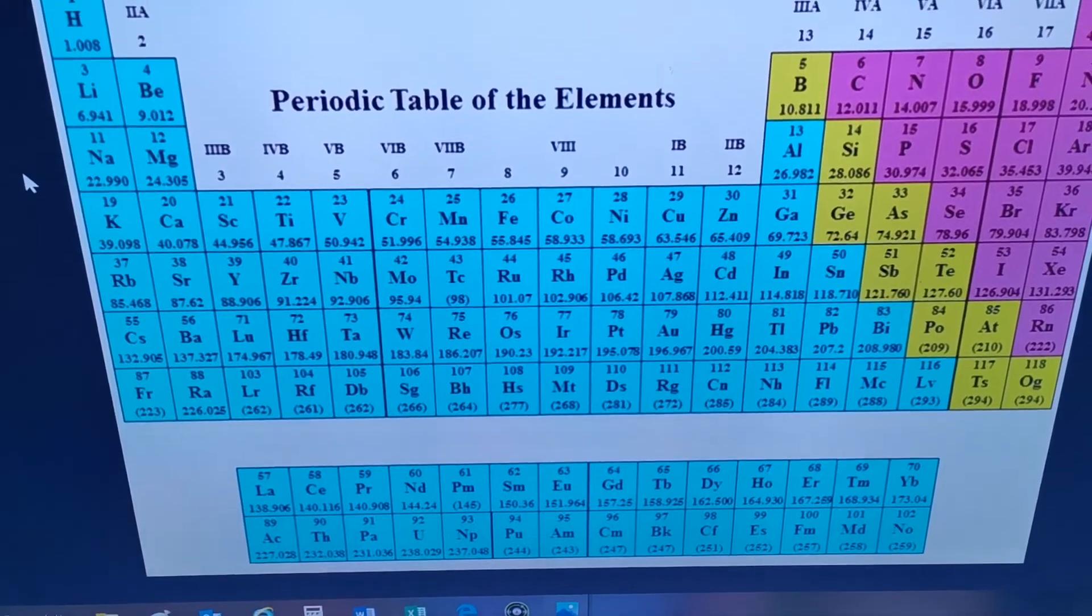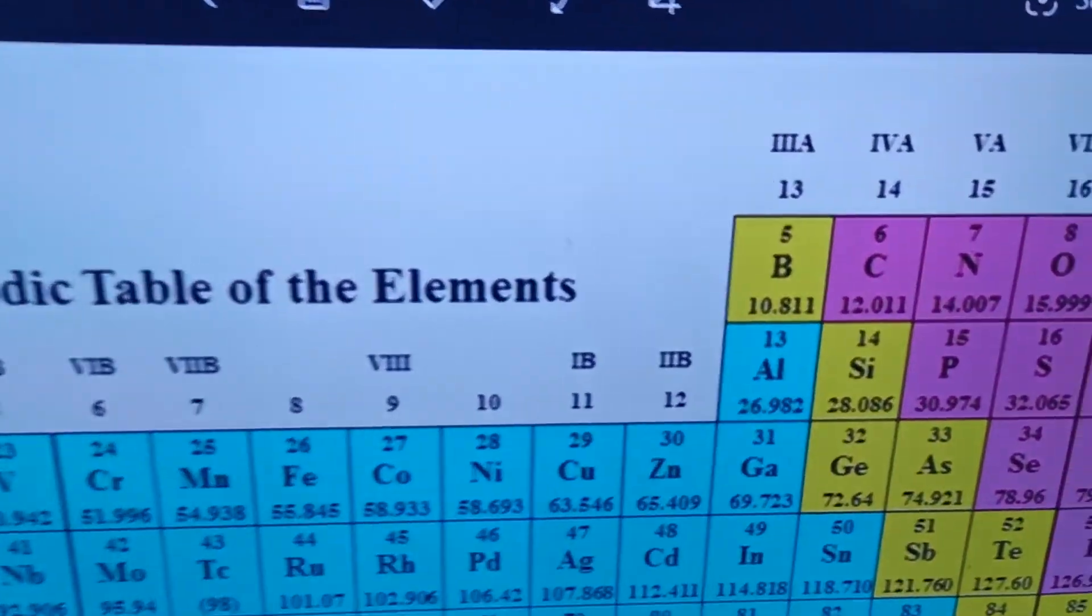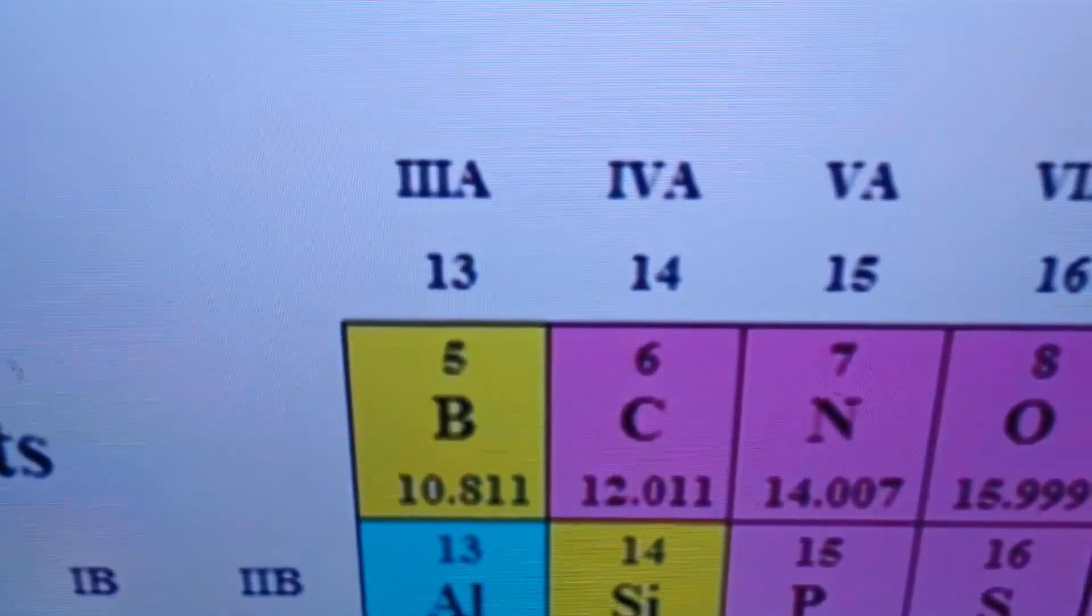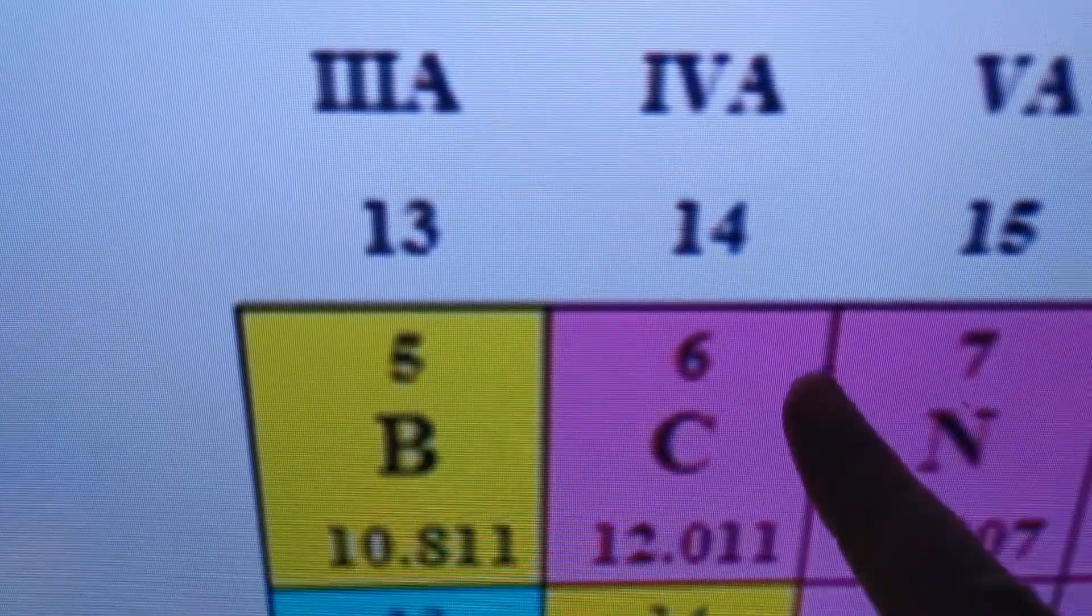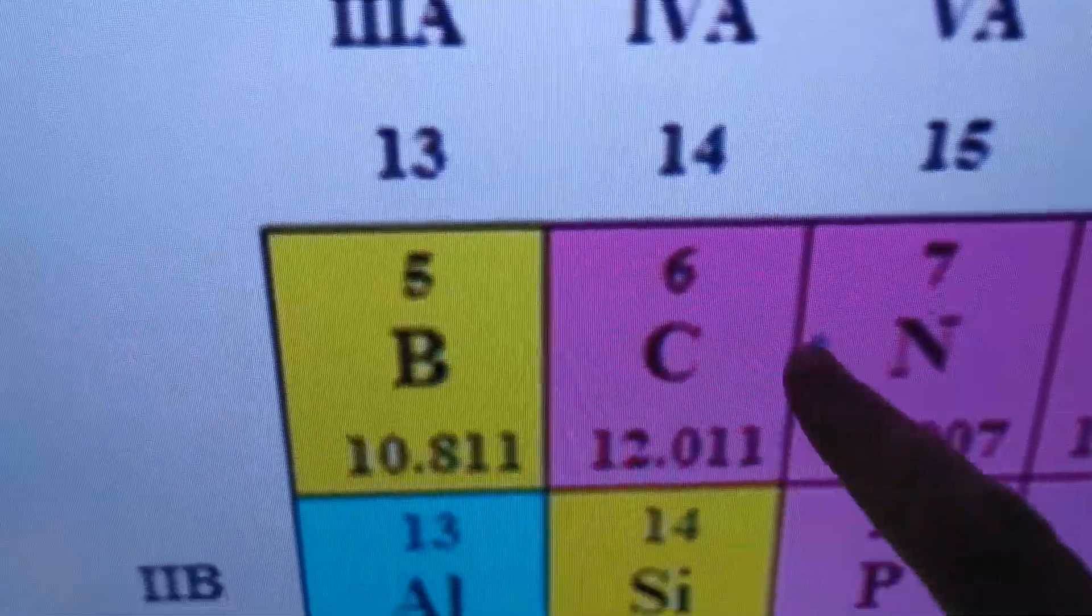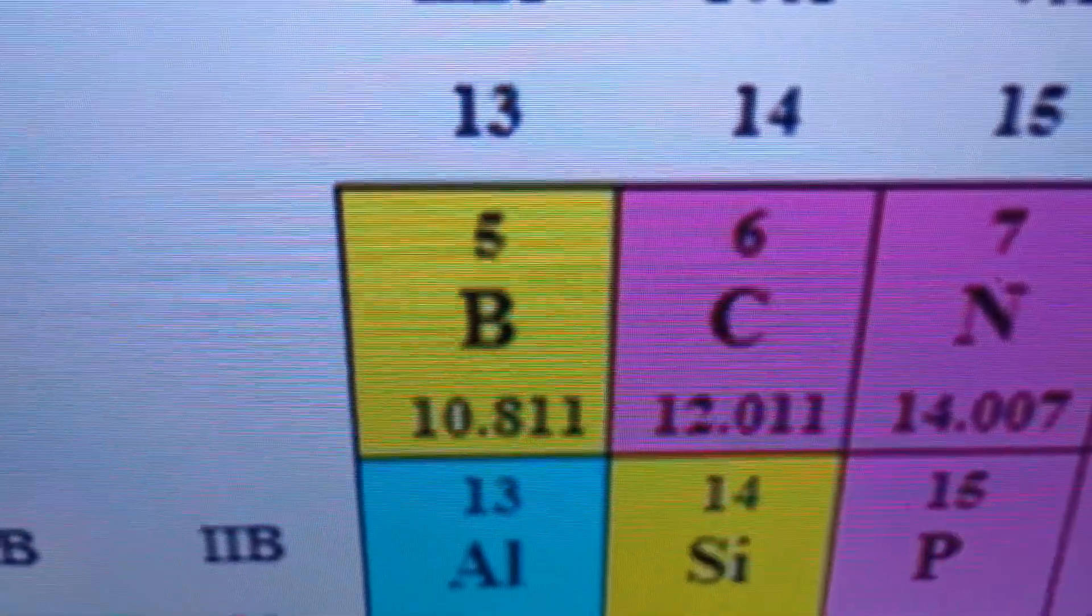So now, where is carbon on my periodic table? If I have a look very closely, carbon falls under a non-metal, and here it is over here. Here is my element of carbon. My atomic number, my symbol, my mass number.